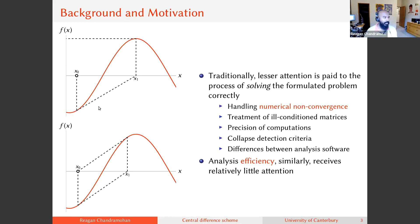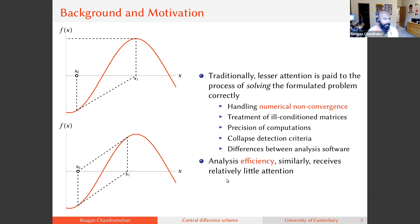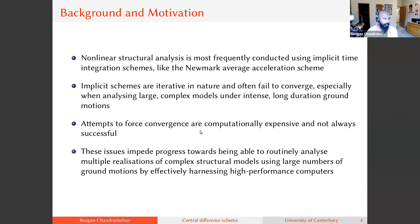Starting with numerical non-convergence — you can probably recognize these plots. I'm essentially solving the scalar non-linear equation f(x) = 0, where I want to find the value of x that makes the function pass through the x-axis. This is essentially what the Newton-Raphson algorithm tries to accomplish, and as you can see, there are a few issues that can occur when using a Newton root-finding algorithm that lead to numerical non-convergence.